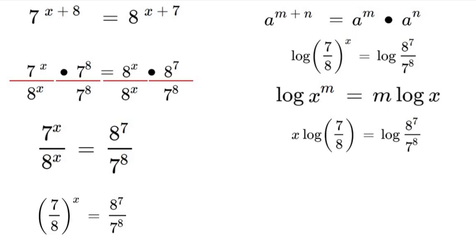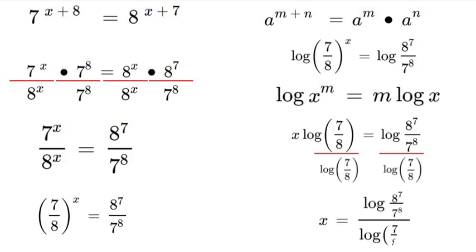Now we're going to divide log 7 over 8 from both sides. And then that will leave us with x equals log 8^7 over 7^8, and all of that is over log 7 over 8. So let's move to a clean slate here.